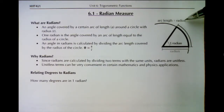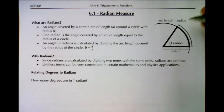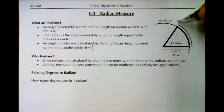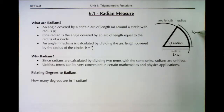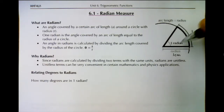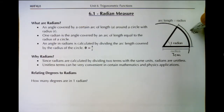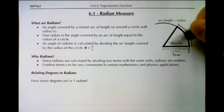Let's say we have a circle with a radius of one centimeter. One radian is the angle you cover when rotating around that circle one centimeter — since the arc length equals the radius. The neat thing about this definition is that it doesn't matter what the radius is. If the radius were seven centimeters, one radian would be the angle covering an arc length of seven centimeters. As long as the arc length equals the radius, that angle is always one radian.